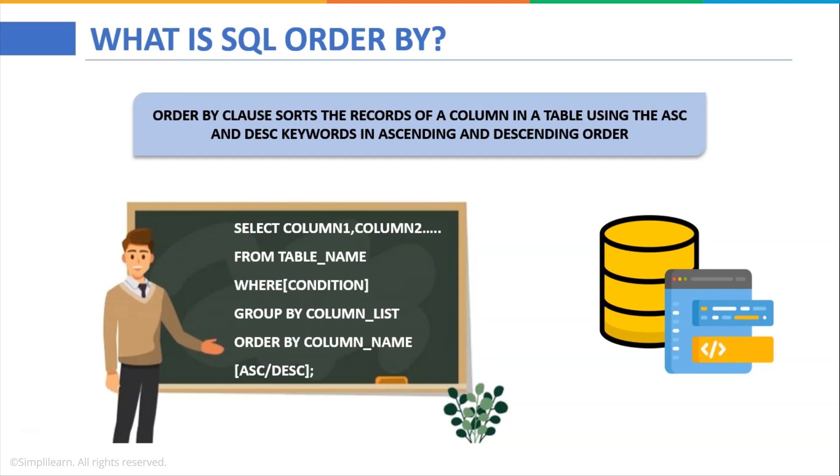Now let us look at the syntax. The syntax is followed as SELECT column one, column two FROM table name WHERE condition which is optional as per your requirement GROUP BY column list ORDER BY column name and you can mention the ASC or DESC keyword as per your need.